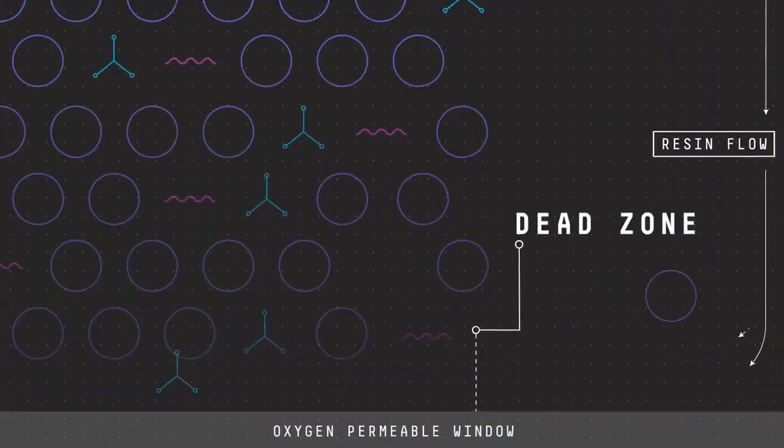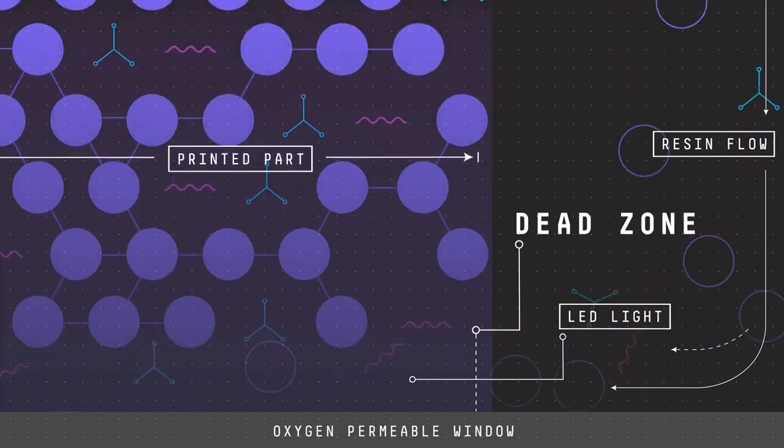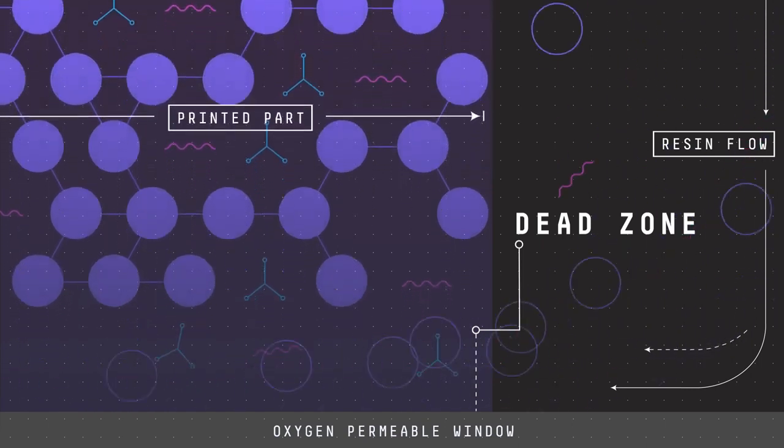In the dead zone, oxygen prohibits light from curing the resin situated closest to the window, thereby allowing for the continuous flow of liquid beneath the part.